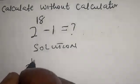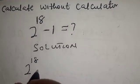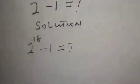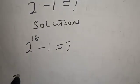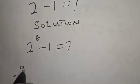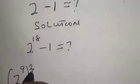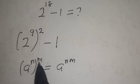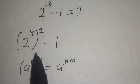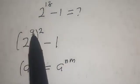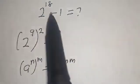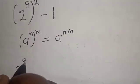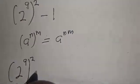2 raised to power 18 minus 1 is equal to what. Now 2 raised to power 18 is the same thing as 2 raised to power 9, raised to power 2, minus 1. Because a raised to power n, raised to power m, equals a raised to power n×m — multiplying 9 times 2 gives you 18.